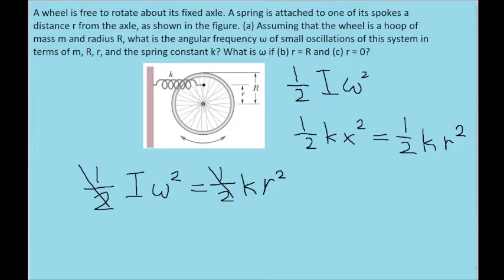But in the case of a hoop, the rotational inertia of the hoop rotating around its central axis is going to be mR squared, where m is the mass of the hoop and R is just the radius of the hoop itself. Just like this.